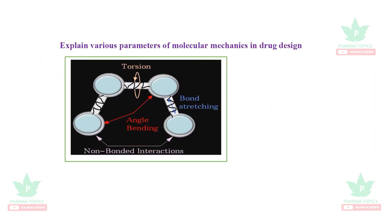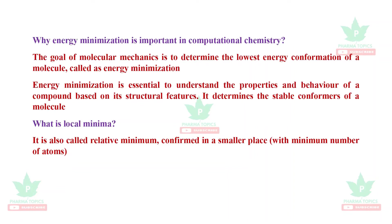The various parameters used in molecular mechanics are torsion angle, bending, bond stretching, and non-bonded interactions. This diagram can be used for your exam. What is energy minimization and what is its importance in computational chemistry? The goal of molecular mechanics is to determine the lowest energy conformation of a molecule, which is called energy minimization.